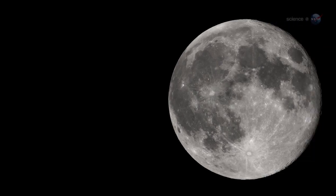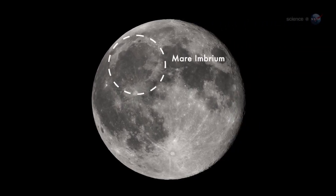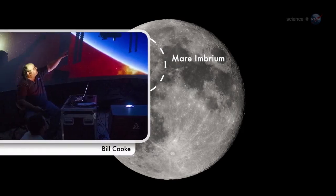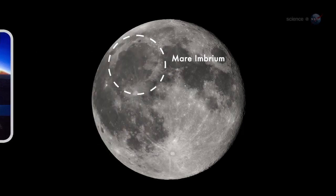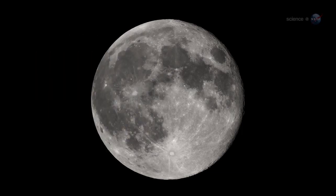On March 17, 2013, an object about the size of a small boulder hit the lunar surface in Mare Imbrium, says Bill Cook of NASA's Meteoroid Environment Office. It exploded in a flash nearly ten times as bright as anything we've ever seen before.